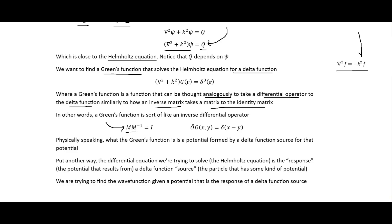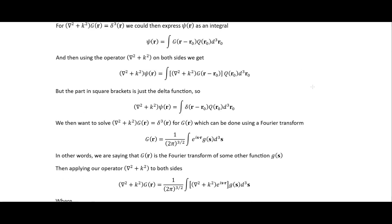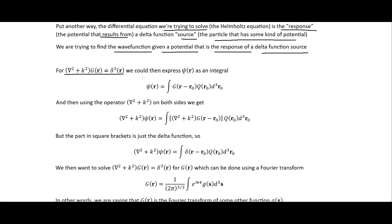Just as a matrix times its inverse gives the identity matrix, a Green's function for an operator applied to that operator yields the Delta function. Physically, the Green's function is the potential formed by a Delta function source — the response of the system to that source. So we're trying to find the wave function given a potential that is the response of a Delta function source.